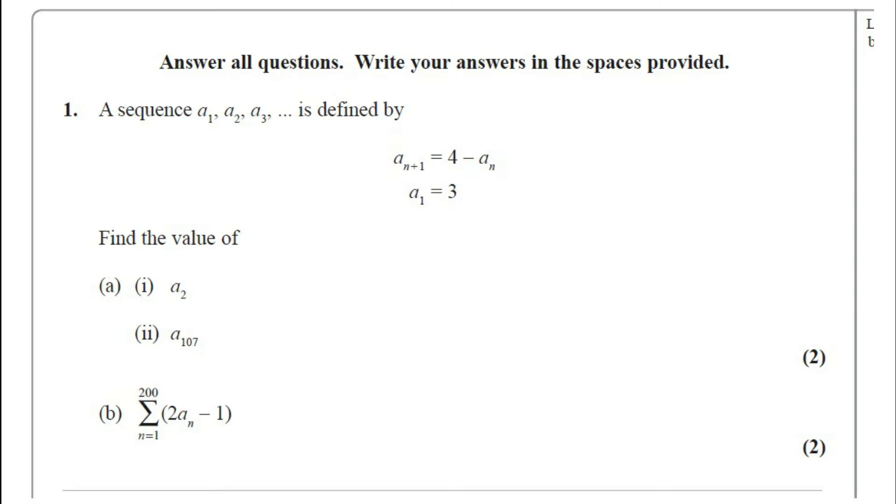A sequence a₁, a₂, a₃, etc. is defined by a_(n+1) = 4 - aₙ, a₁ = 3. Part a: find the value of a₂ and a₁₀₇. The question carries two marks. And part b: summation n equals 1 to 200 of 2aₙ minus 1. The question carries two marks.